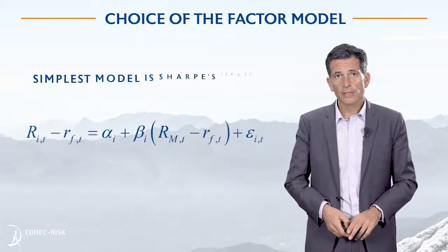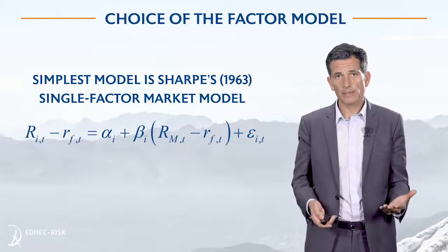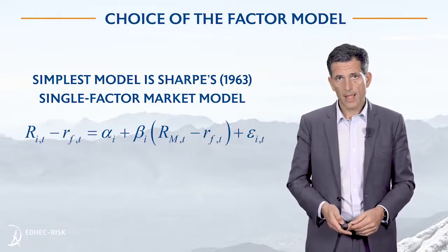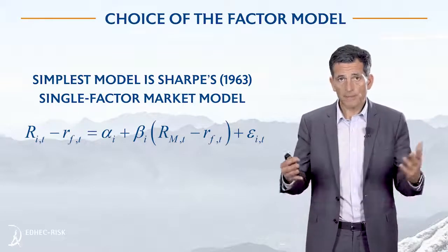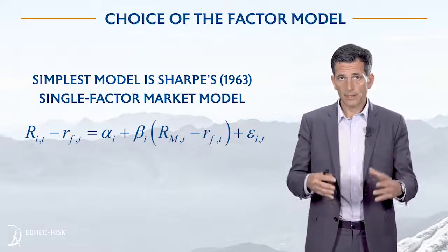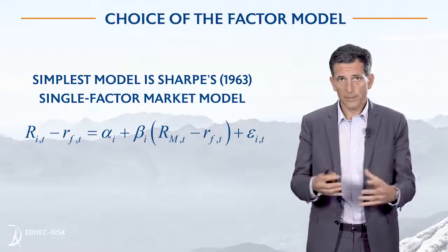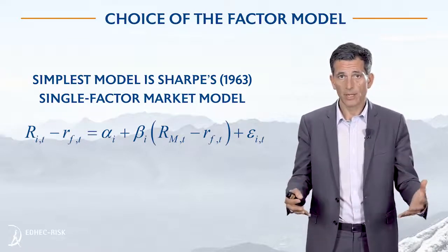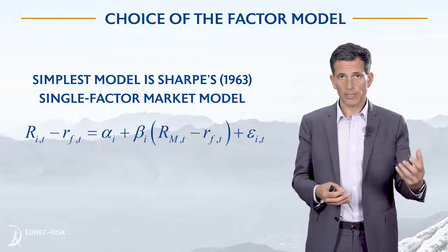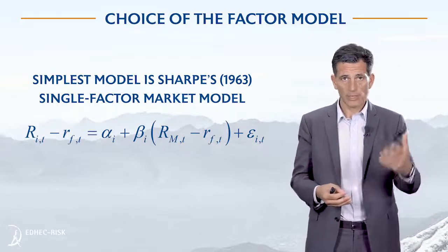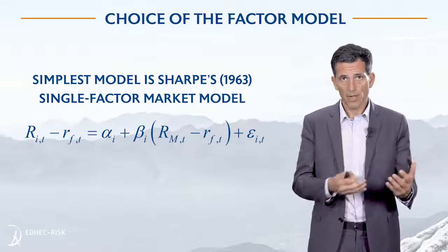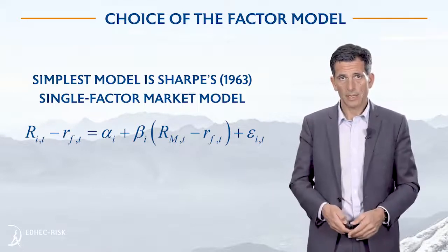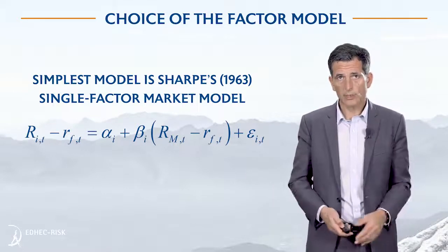The next question that remains is what kind of factor models we are going to be using. You can use the simplest factor model — the most basic one — which is a single factor model. What you're doing is regressing the return on individual stocks on the return on the market, and you get a single beta in this case.